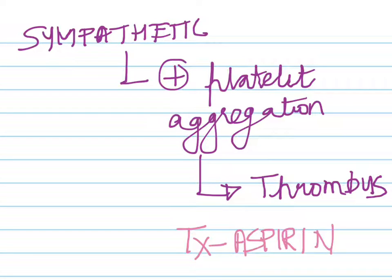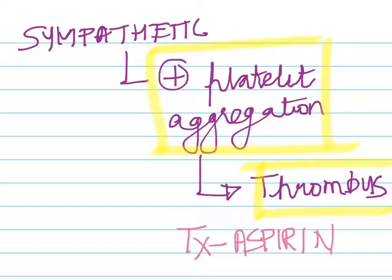This sympathetic response not only causes coronary vasoconstriction, it also causes platelet aggregation. Because of this platelet aggregation, there could be a possible formation of a thrombus. A thrombus could be caused in cocaine toxicity, and this is how they explain it. Thrombus formation is possible, because of which aspirin proves to be a good medication to address it.